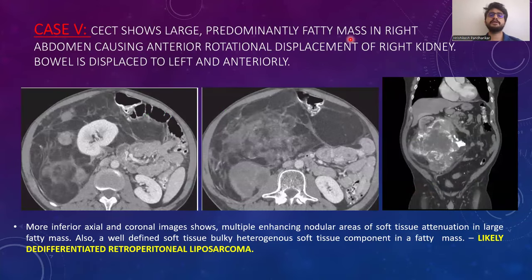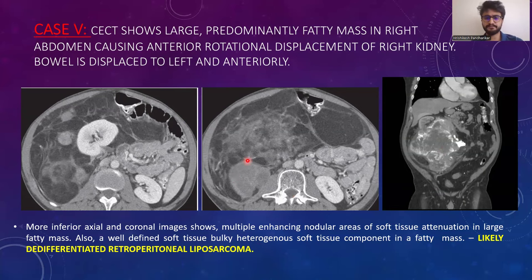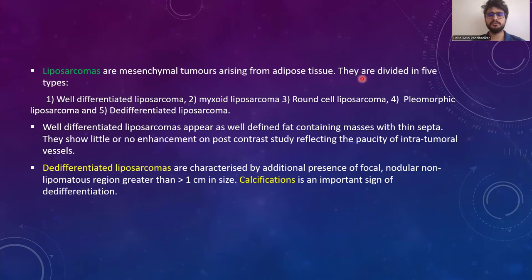Case 5: CCT shows a large predominantly fatty mass in the right abdomen causing anterior displacement of the right kidney, with bowel displaced to the left and anteriorly. Inferior axial and coronal images show multiple enhancing nodular areas of soft tissue attenuation within the large fatty mass, along with a well-defined bulky heterogeneous soft tissue component — likely dedifferentiated retroperitoneal liposarcoma. Liposarcomas are mesenchymal tumors arising from adipose tissue, divided into five types: well-differentiated, myxoid, round cell, pleomorphic, and dedifferentiated. Well-differentiated liposarcomas appear as fat-containing masses with thin septa and little enhancement. Dedifferentiated liposarcomas are characterized by focal nodular non-lipomatous regions greater than one centimeter, and calcification is an important sign of dedifferentiation.